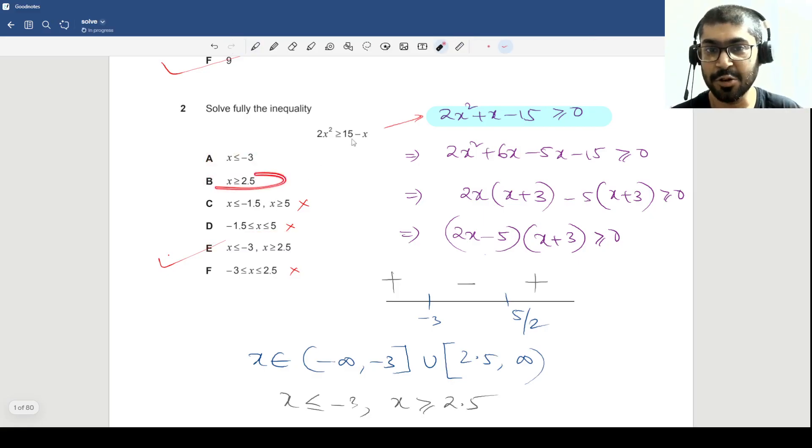Check any value that is less than -3. So check -4. So you will get 2 into -4 whole square. So 2 into -4 whole square is 32, greater than equals to 15 minus -4, 19. True. So that means both of these will hold together. Therefore option E.